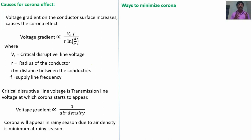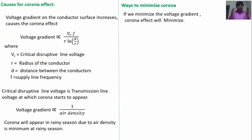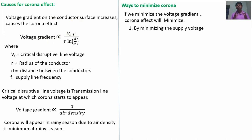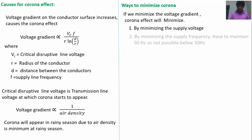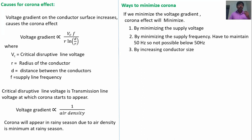Next, ways to minimize corona effect. First, by minimization of voltage gradient. To minimize the voltage gradient: if you minimize the line voltage, you can minimize the voltage gradient. But this is not very practical — we cannot minimize the supply voltage to a very low level. In a generation station, power generation is constant; if I minimize the voltage, the current will increase, and I-squared-R loss will increase. Second, by minimization of supply frequency — also not possible because we have to maintain 50 Hz frequency. Third, by increasing conductor size — this is possible.